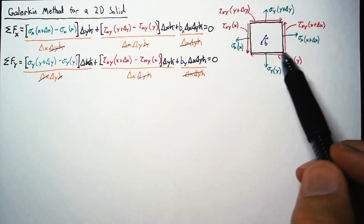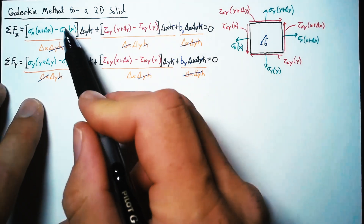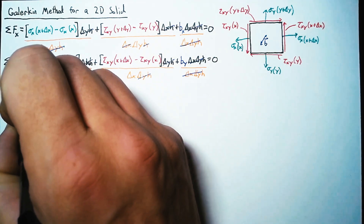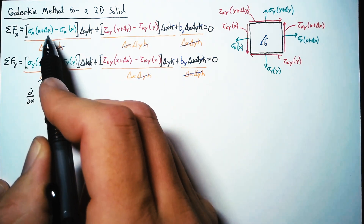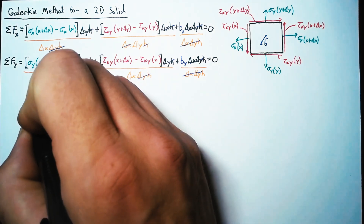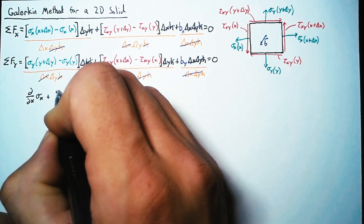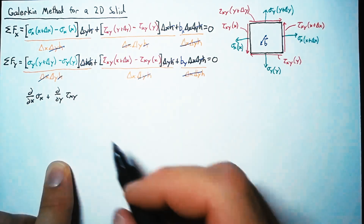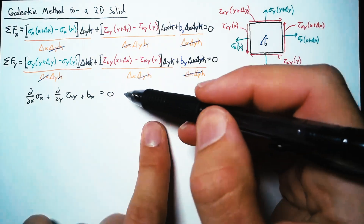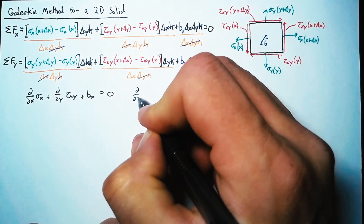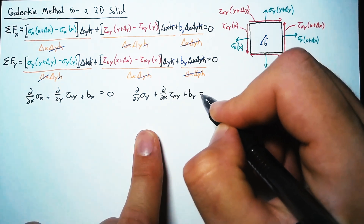When we're talking about a differential element, delta x and delta y are very small. As these become tiny, we can replace the difference terms with derivatives. So the first term in our x force equation becomes d/dx of sigma x, and likewise that term becomes d/dy of tau xy. Adding the body force, that equals zero. For the second equation: d/dy of sigma y plus d/dx of tau xy plus b_y equals zero.